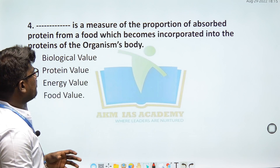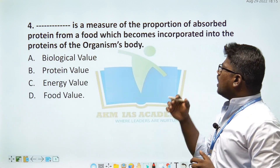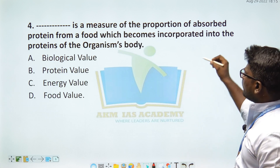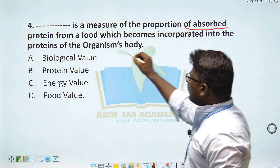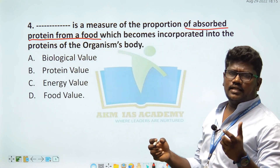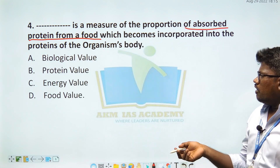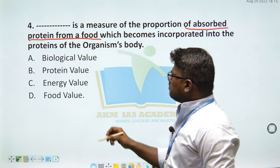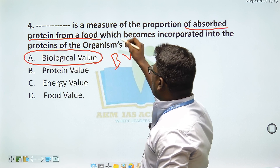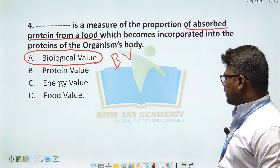Biological value is the measure of the proportion of absorbed protein from a food which becomes incorporated into the proteins of the organism's body. The options were: option A — biological value, option B — protein value, option C — energy value, option D — food value. Option A is the right answer: biological value is the amount of protein observed from food into the consumer's body.